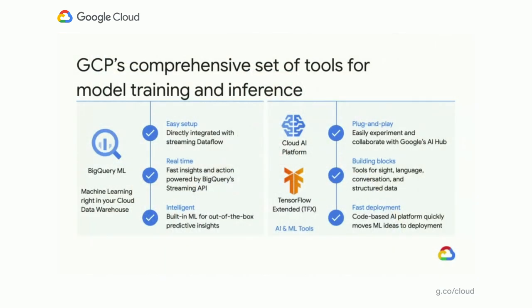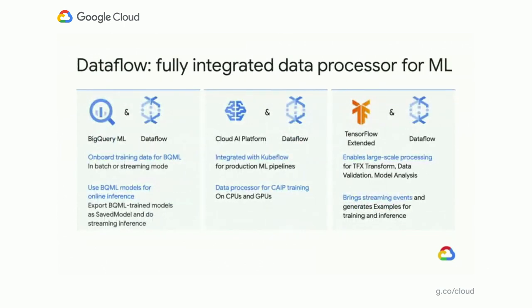The Google Cloud offers a comprehensive set of tools for model training and inference. BigQuery, for example, allows you to do model training and predictions right inside of your data warehouse. Outside of BigQuery, GCP has the Cloud AI Platform and TensorFlow Extended. Cloud AI Platform offers training, inference, and many specialized services for video, image, text processing, and other types of unstructured data processing. TensorFlow Extended is a platform for production use of machine learning, centered around TensorFlow, but available not just on the Google Cloud. What is common to all these machine learning options is the solid integration of Dataflow as the data processor.